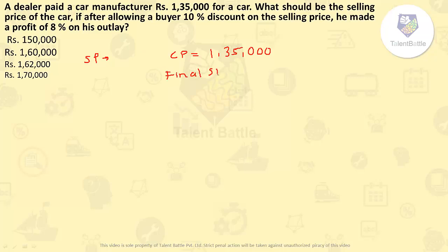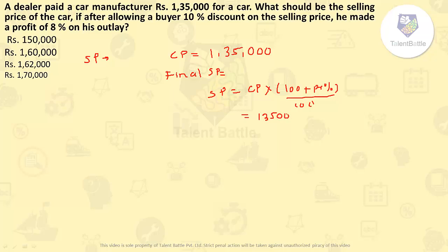We need to find the final selling price which gives 8% profit. The formula is: Selling Price = Cost Price × (100 + Profit%) / 100. Cost price is 1,35,000 and profit is 8%, so that is 108/100. Calculating 1,35,000 × 108 gives us 1,45,800. So the final selling price at which the dealer sells is Rs 1,45,800.